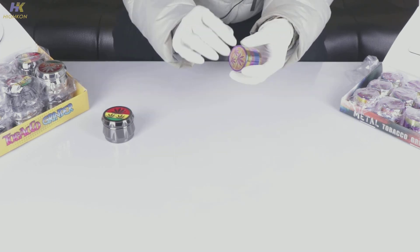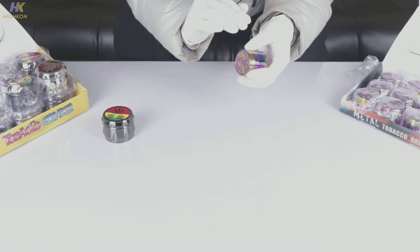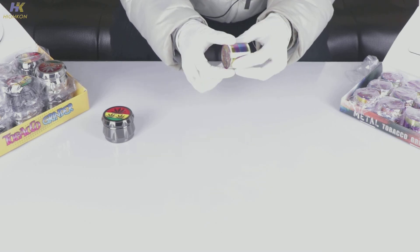And one more thing about this smaller grinder is that they have a different way of anti-slip. On the surface of the cover, you can see some anti-slip curves to prevent your fingers from slipping while twisting.